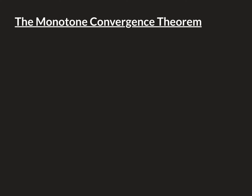So what is a monotonically increasing sequence? We have some sequence of real numbers a1, a2, a3, and I'll start indexing from 1 rather than 0. To be monotonically increasing means that for all n in the natural numbers, a_{n+1} is greater than or equal to a_n.